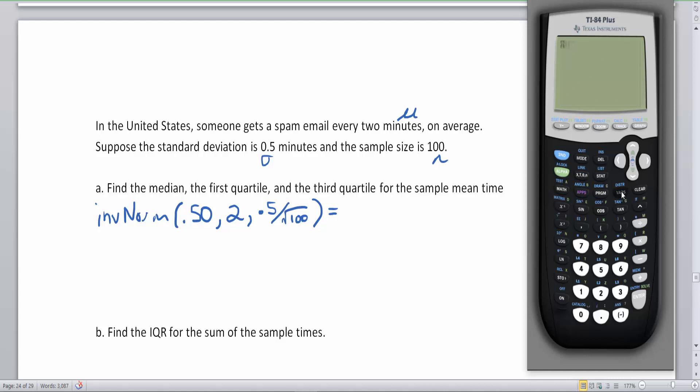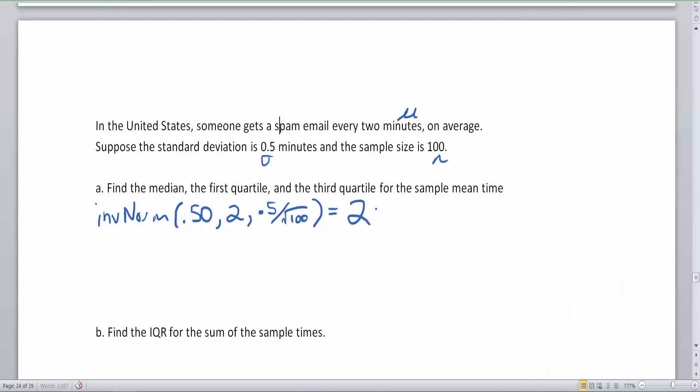And this is going to be our standard deviation of 0.5 divided by the square root of our sample size, which is the same thing as 0.5 divided by 10. But if I type all this into the calculator, you're going to see maybe an obvious answer. Let's go to second vars, inverse norm. Let's type in our area, which is 0.5, which is halfway of a normal curve. This is the average of 2 and then we have 0.5 divided by the square root of the sample size. We get an answer of 2. Because the median is the same thing as the average, in a normal curve, the mean, median, and mode are all the same.